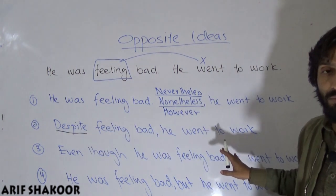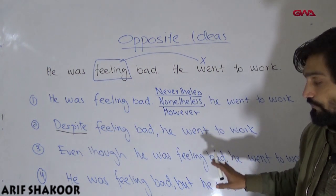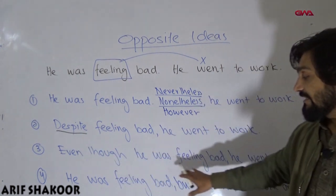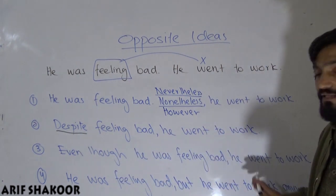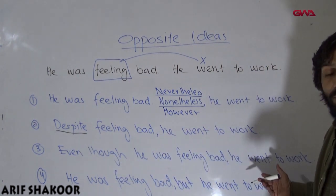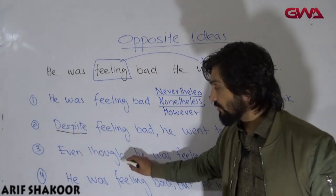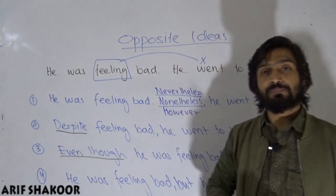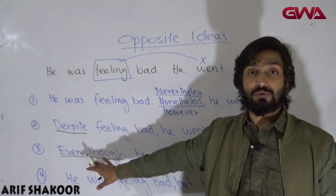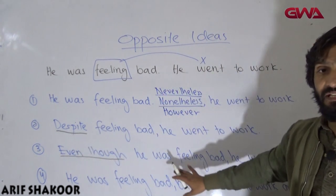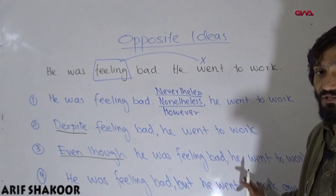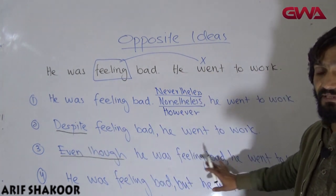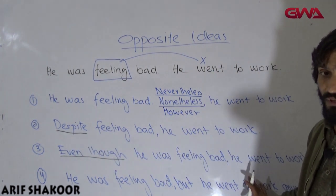The third category, subordinators: 'Even though he was feeling bad, he went to work.' Even though is a subordinator. We can also say 'Although he was feeling bad, he went to work,' or 'Though he was feeling bad, he went to work.'